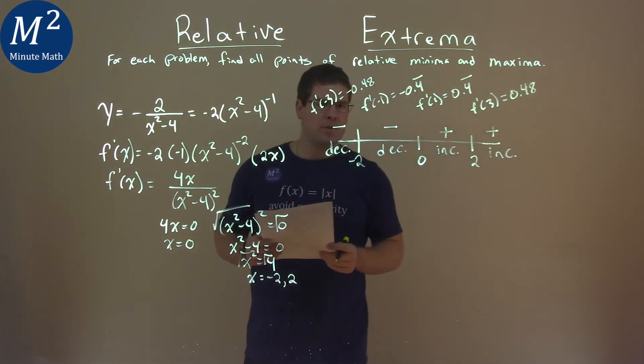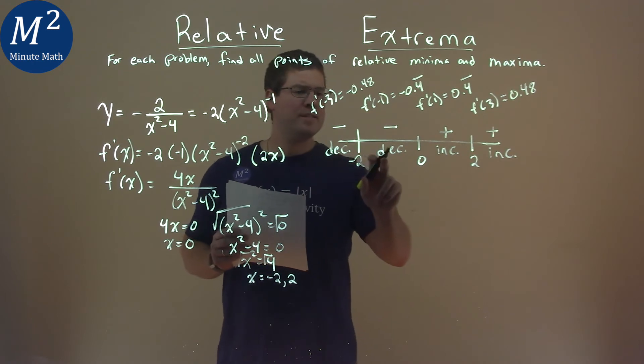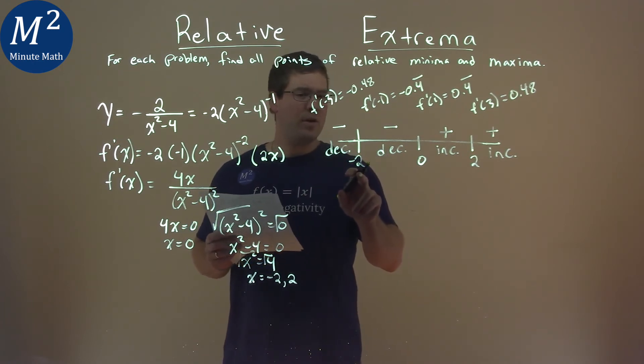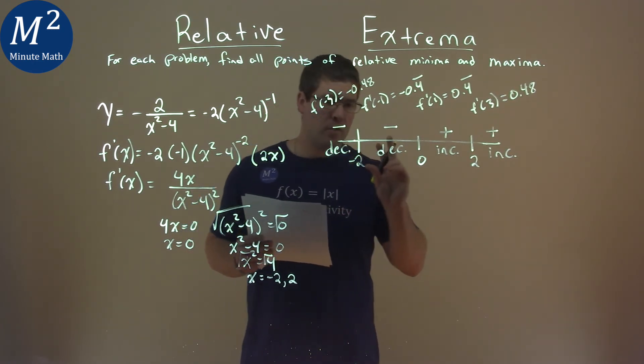Now this one's a little tricky. Notice we're going decreasing then decreasing, so we don't have a relative minimum or max at negative 2. It's only when we switch.